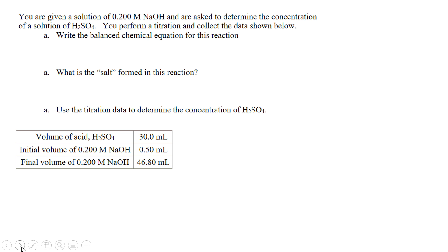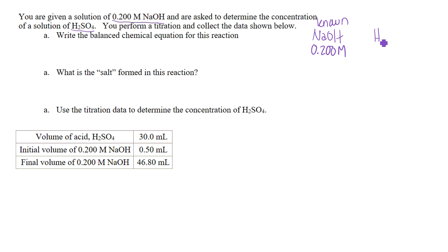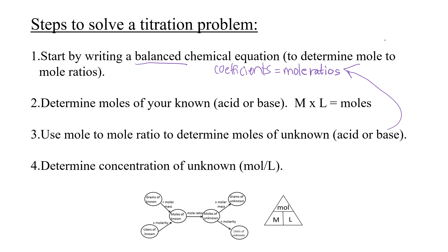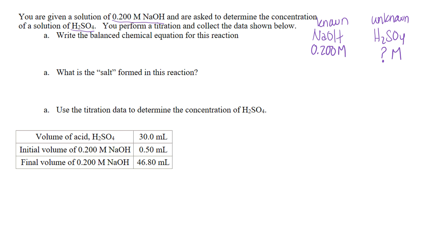Let's take a look at a couple of examples. In this first one, we're given a solution of 0.2 molar NaOH and asked to determine the concentration of H2SO4. NaOH is my known — I know its molarity — and H2SO4 is my unknown. Step one is to write a balanced chemical equation.